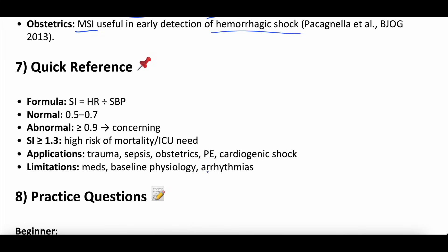Quick reference: the shock index formula is heart rate divided by systolic blood pressure. Normal is less than 0.7. Abnormal is greater than 0.9. A shock index greater than 1.3 is very high risk of mortality and ICU need. Use this in trauma, septic, obstetric, PE, and cardiogenic shock patients. It is limited by beta blockers, calcium channel blockers, arrhythmias, and baseline physiology variations like chronic bradycardia.